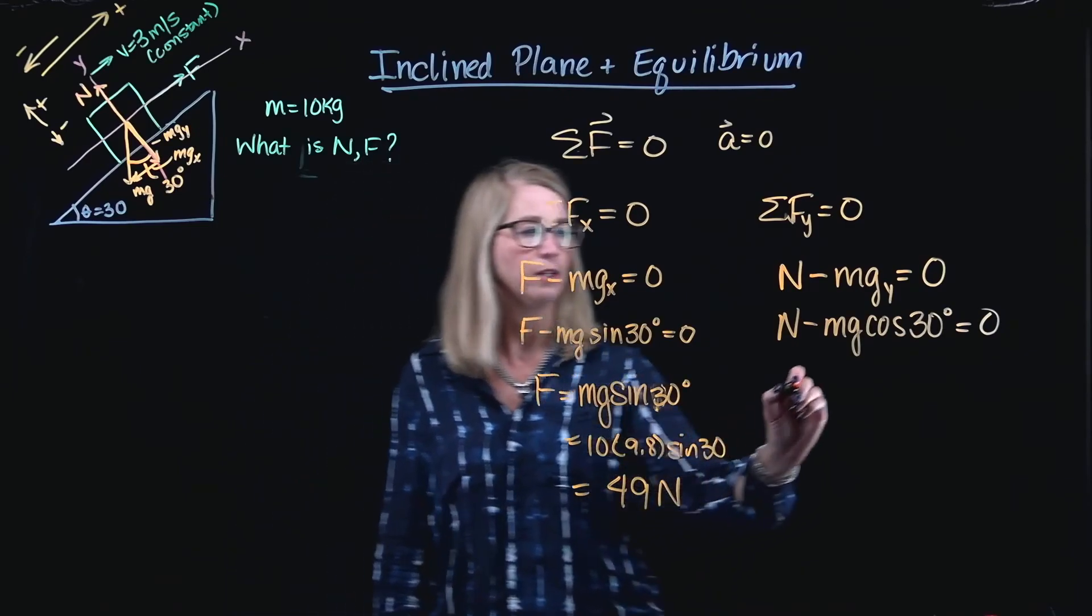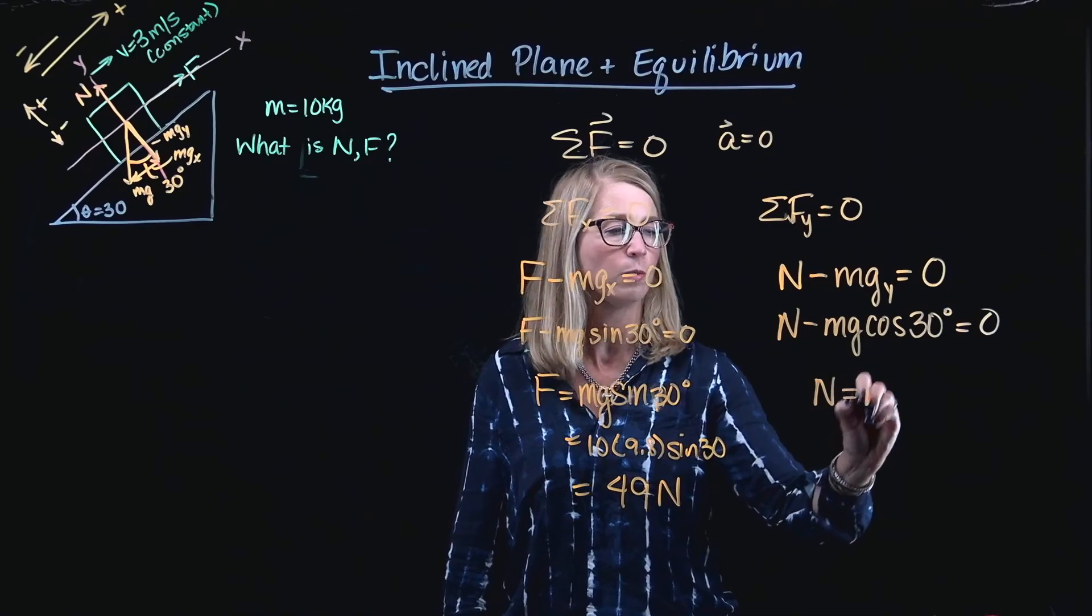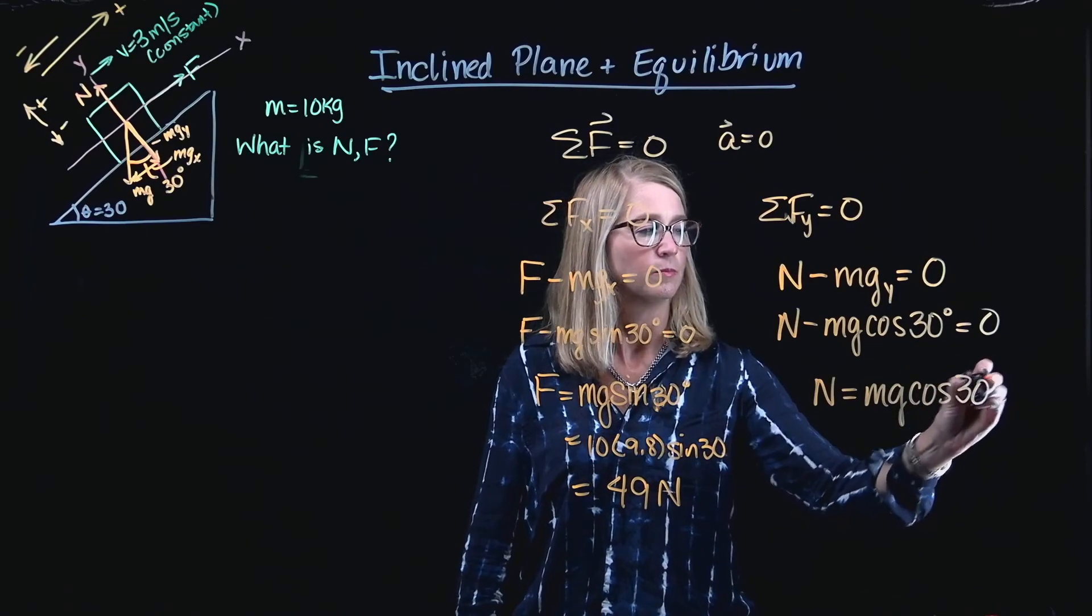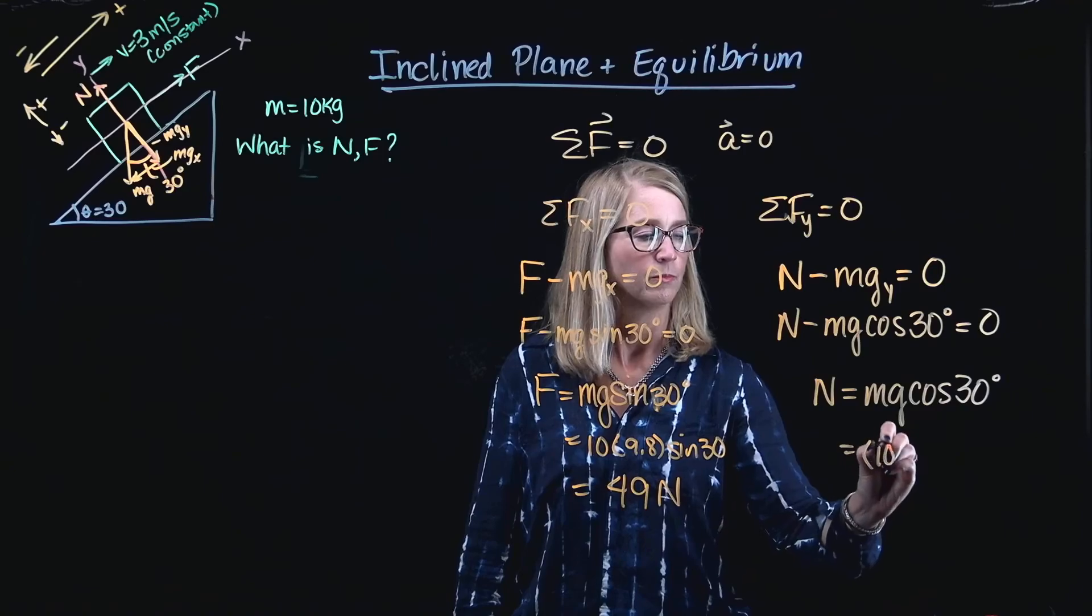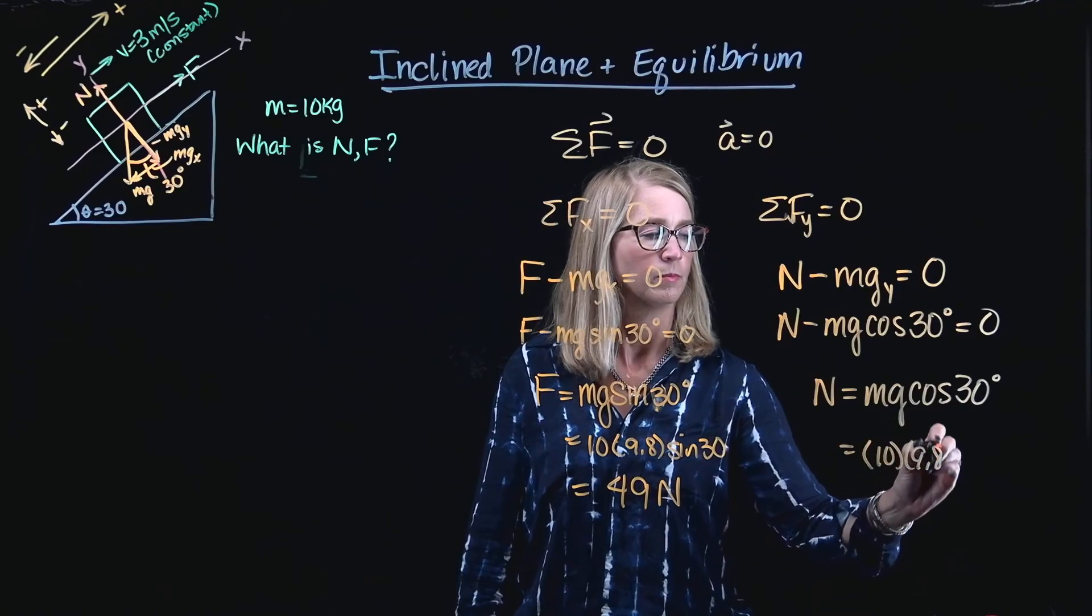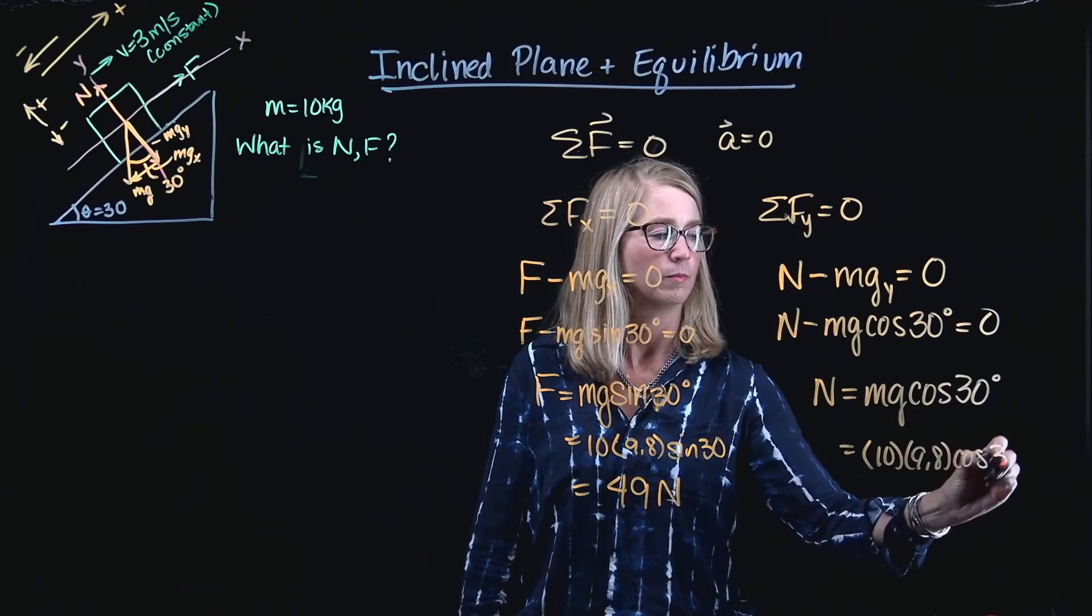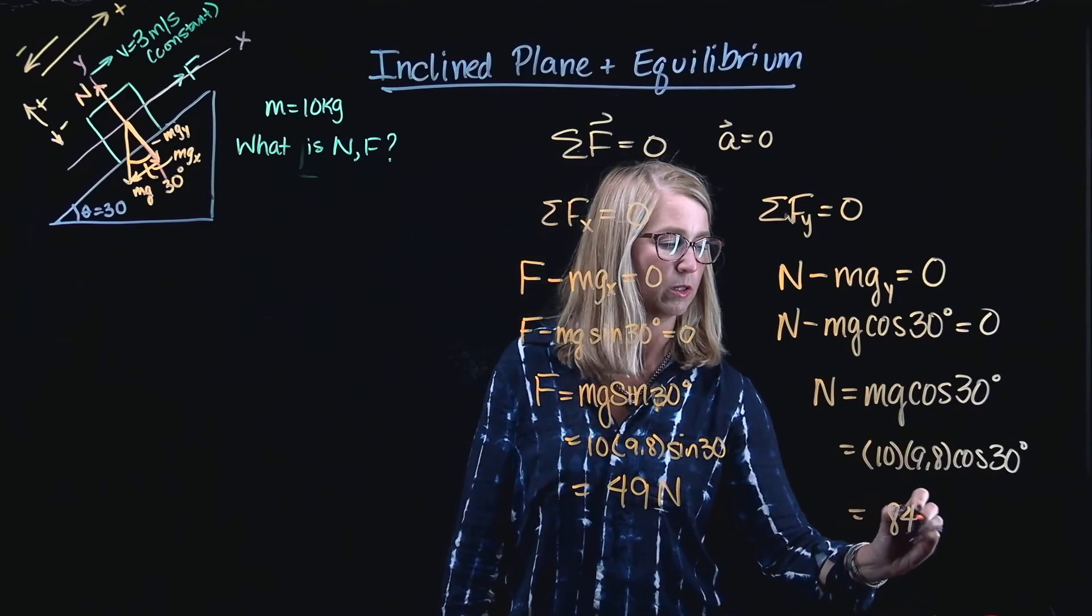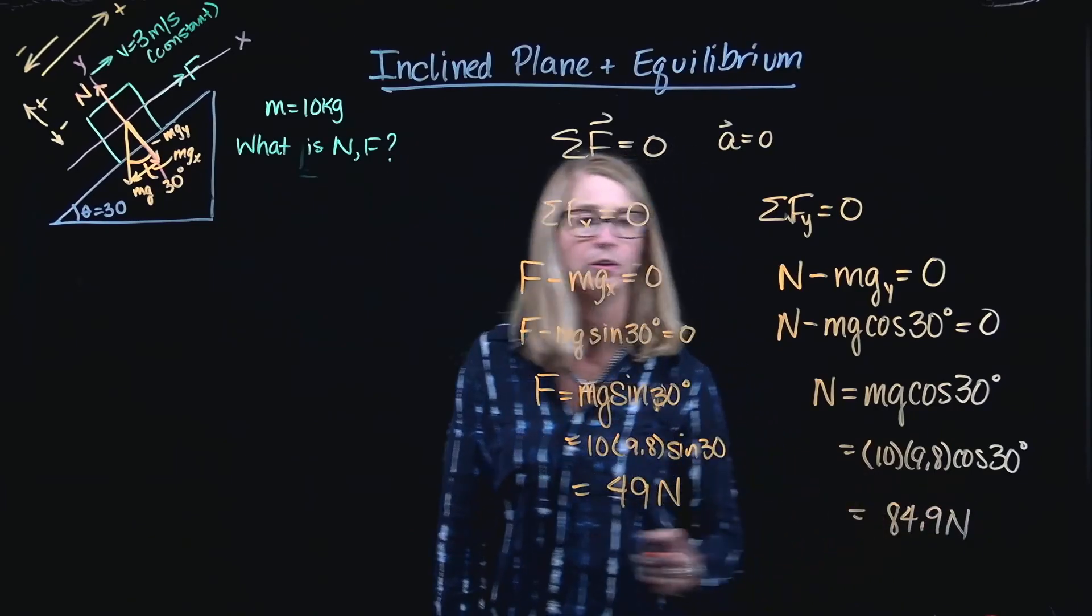Then I can actually rearrange this to solve for normal, N equals mg cosine 30 degrees, and find that my normal force ends up to be 84.9 newtons.